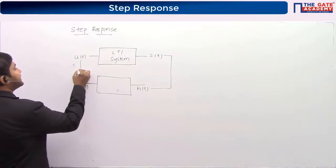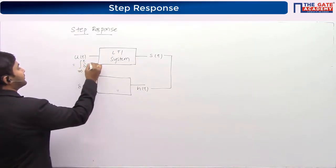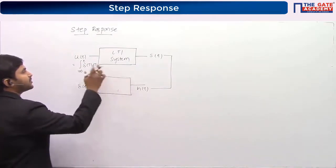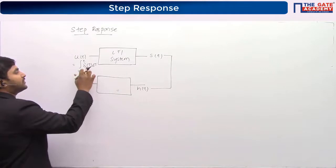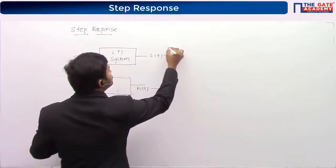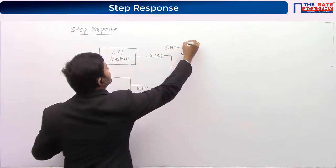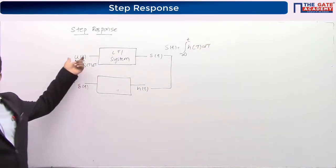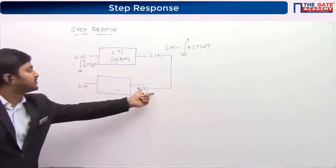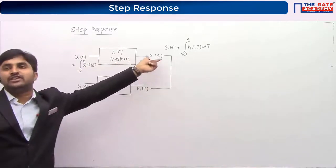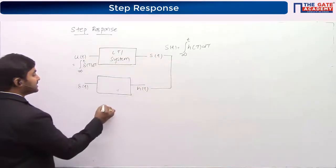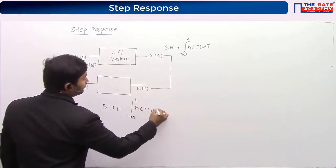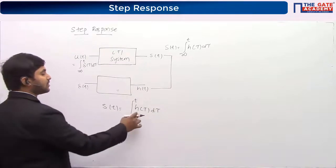u(t) can be written as the integration of δ(τ) dτ from minus infinity. If δ(t) gives h(t), then the integration of δ(t) should give you the integration of h(t). Therefore, s(t) is equal to the integral from minus infinity of h(τ) dτ.